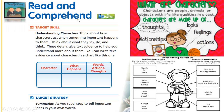In the Read and Comprehend section, we will learn all about the target skill — that is understanding characters. Think about how characters act when something important happens to them. Think about what they say, do, and think. These details give text evidence to help you understand more about them. You can write text evidence about characters in a chart like this one.